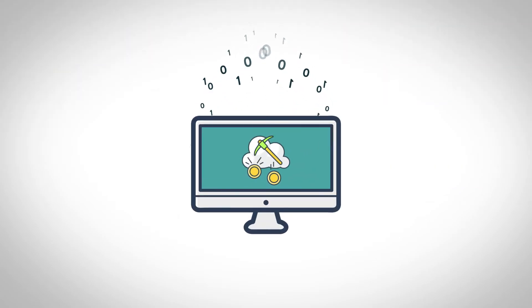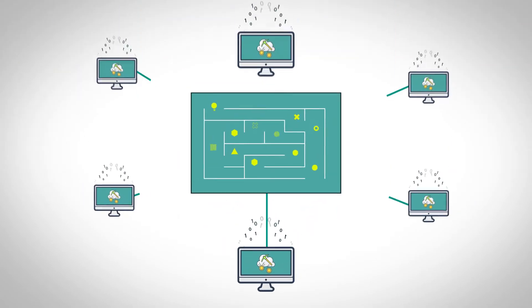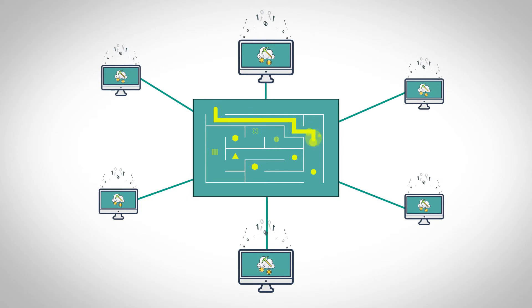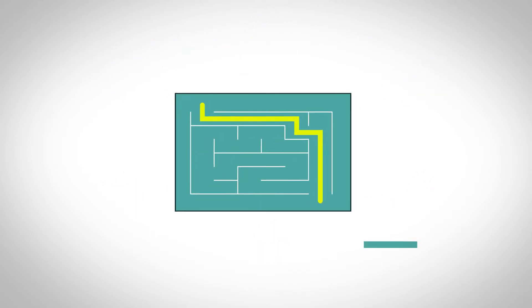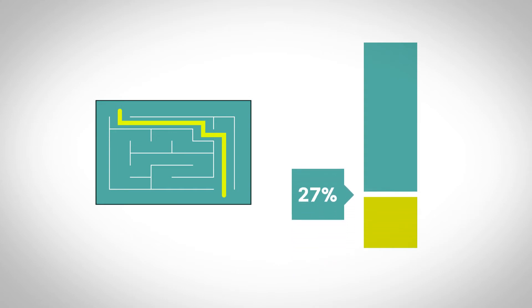Proof-of-work uses cryptographic functions that essentially guarantee a certain number of computer cycles were spent to solve the puzzle. In other words, by solving this puzzle, you are proving that you did some amount of work.